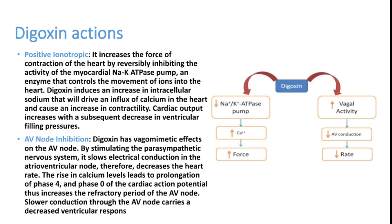Digoxin is used in many conditions such as cardiac failure with reduced LV ejection fraction, atrial fibrillation, and supraventricular tachycardia. However, nowadays digoxin is indicated in only one condition: patients having low ejection fraction with atrial fibrillation. Atrial fibrillation with cardiac failure is the main indication we practice for digoxin today.